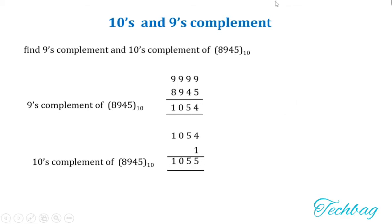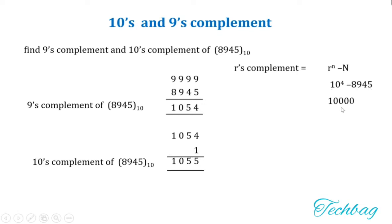Let us verify: using the formula R^n minus N, the base is 10 and the number of digits is 4, so 10^4 minus 8945 equals 10000 minus 8945, which gives 1055. We get the same answer, confirming you can use either method to calculate the 10's complement.